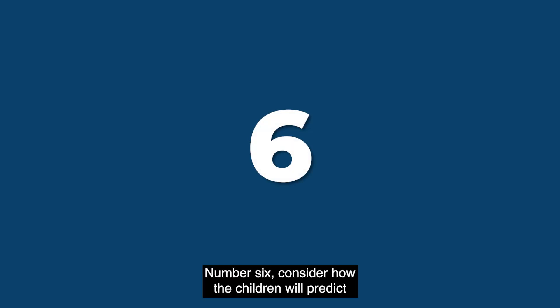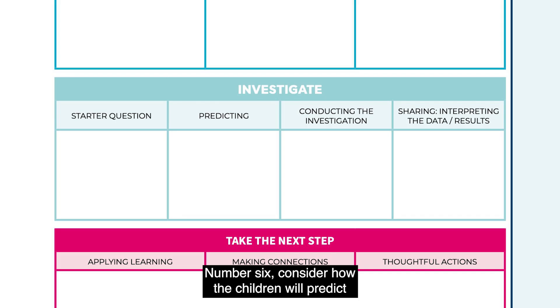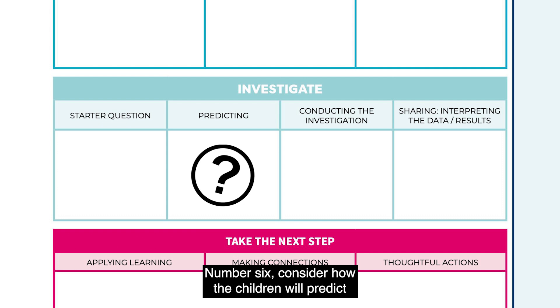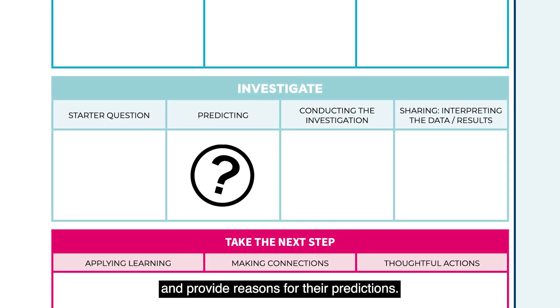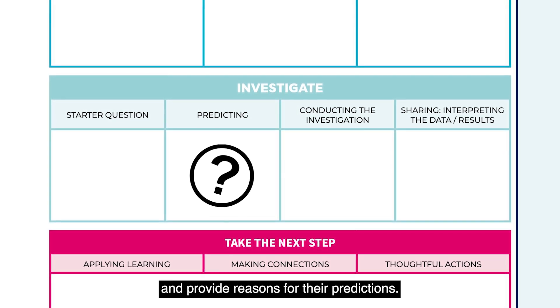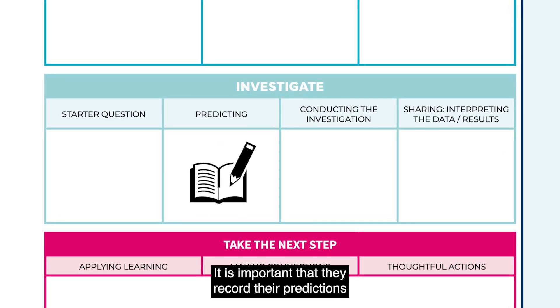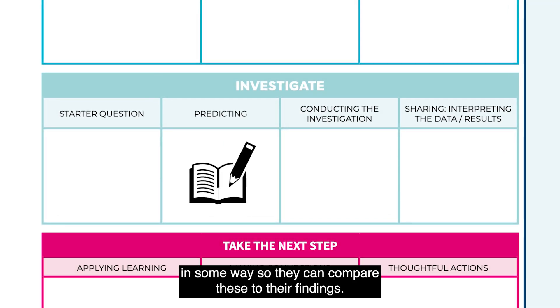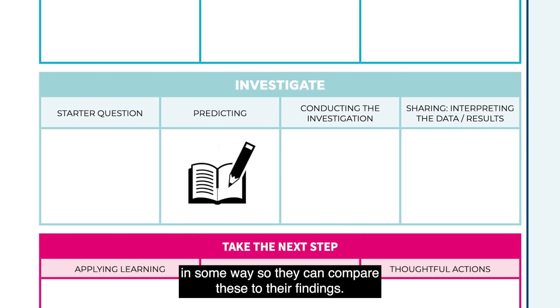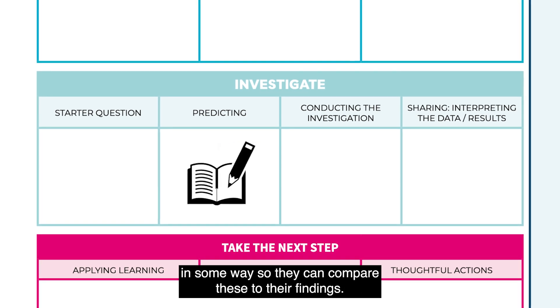Number six: consider how the children will predict and provide reasons for their predictions. It is important that they record their predictions in some way so they can compare these to their findings.